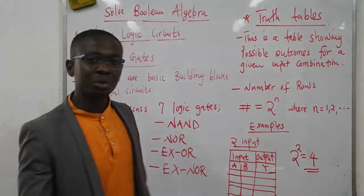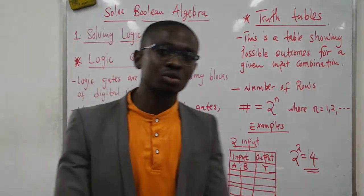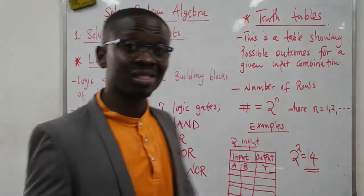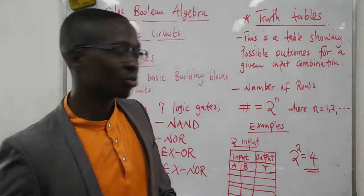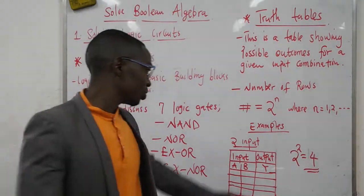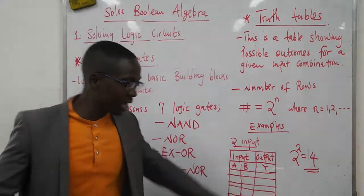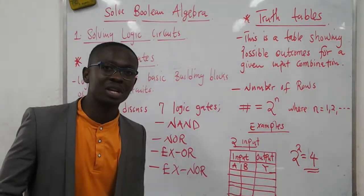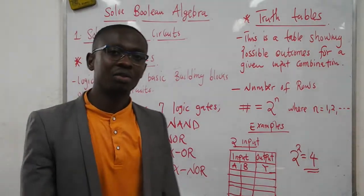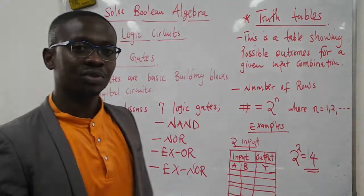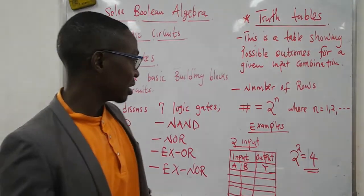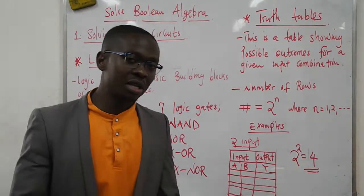If the inputs were 3, it would be 2 to the power 3, which would be 8. You would have 8 possible combinations of inputs, and so on and so forth.